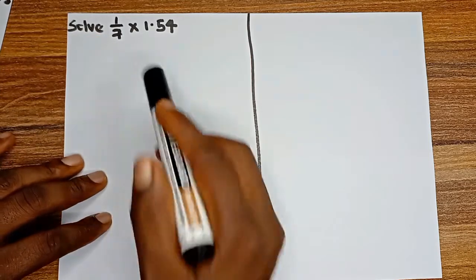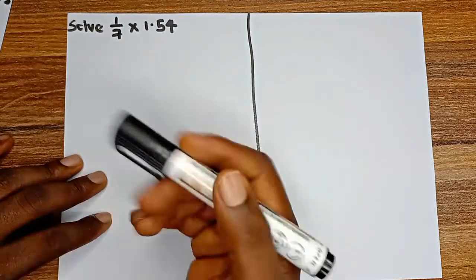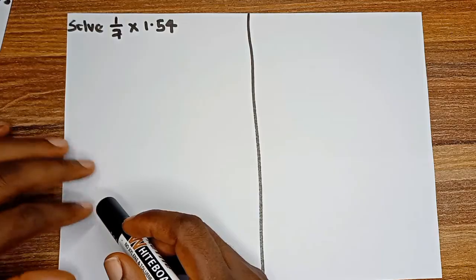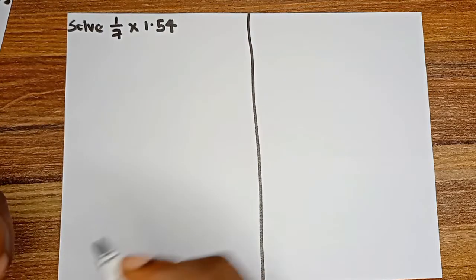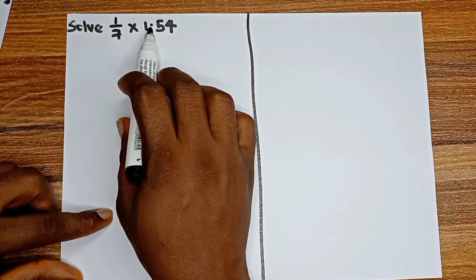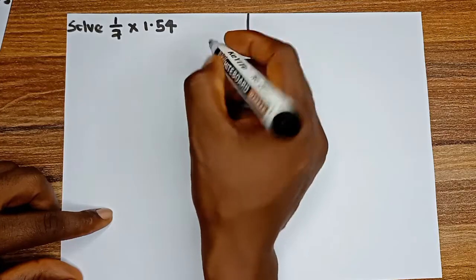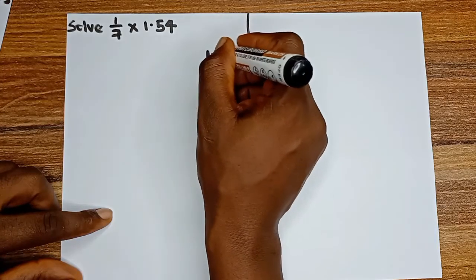Let's go ahead and do that. We have to convert 1.54 to a fraction. Now to convert a decimal to a fraction, you simply move this decimal point from wherever it is to the end of the value. So 1.54...